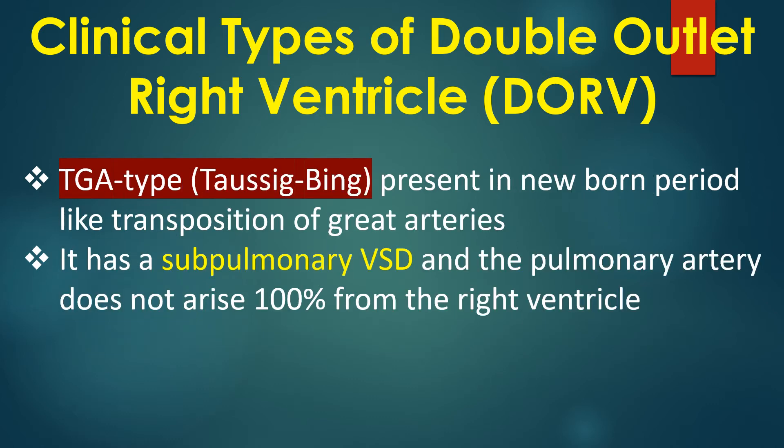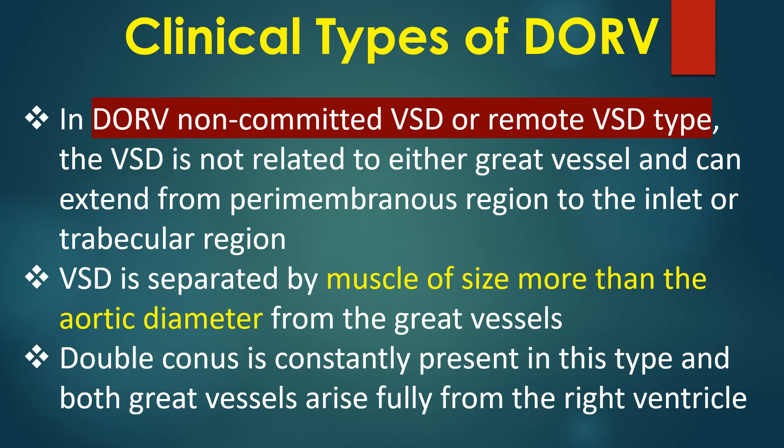TGA type presents in the newborn period like transposition of great arteries. It has a sub-pulmonary VSD and the pulmonary artery does not arise 100% from the right ventricle.